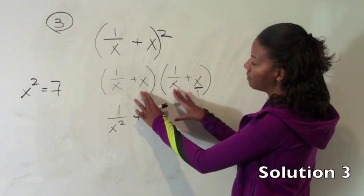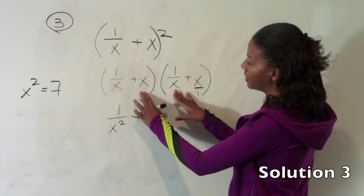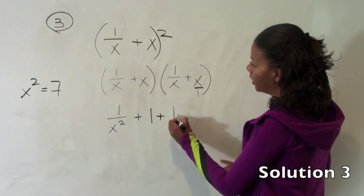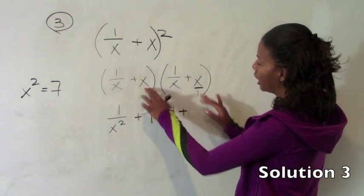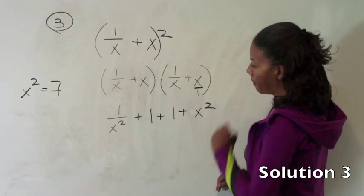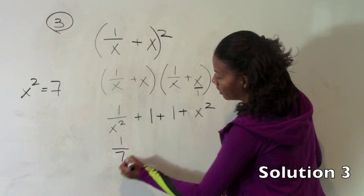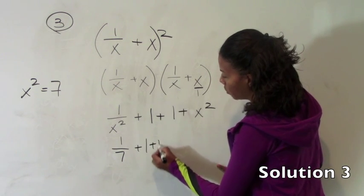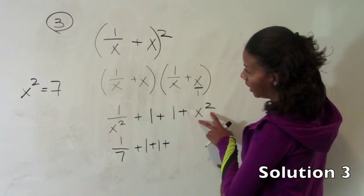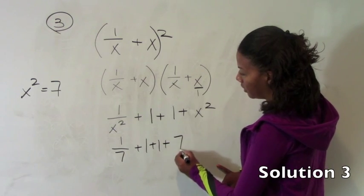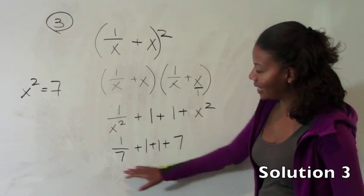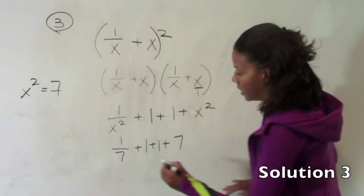And your inside terms, same thing. These numbers are reciprocals of each other. So that's another 1. And then finally, x times x is x squared. So x squared equals 7. So that's 1 over 7 plus 1 plus 1 plus x squared again is 7. So here you get 9 and 1 7th as your answer.